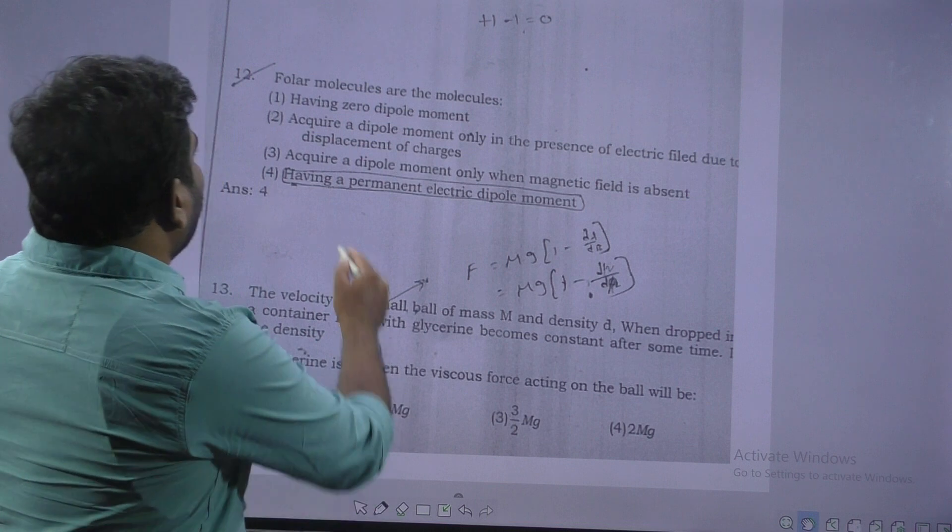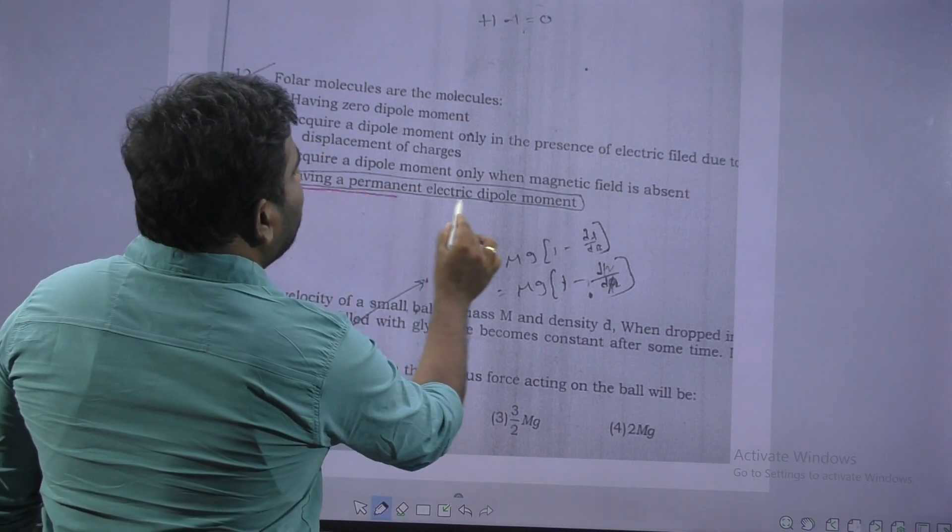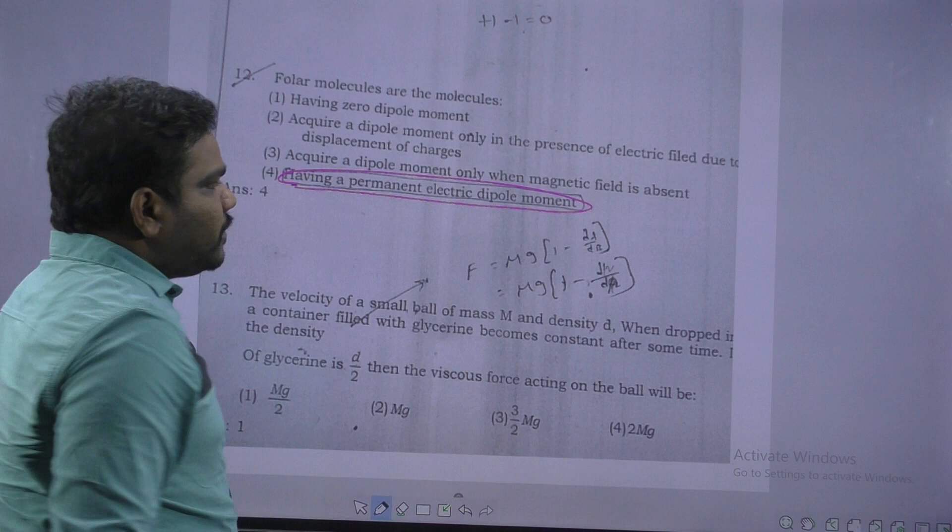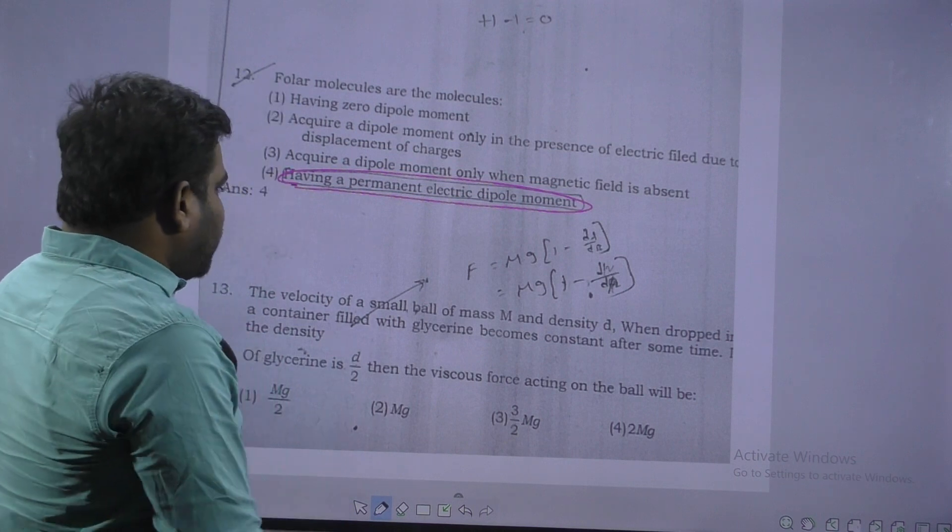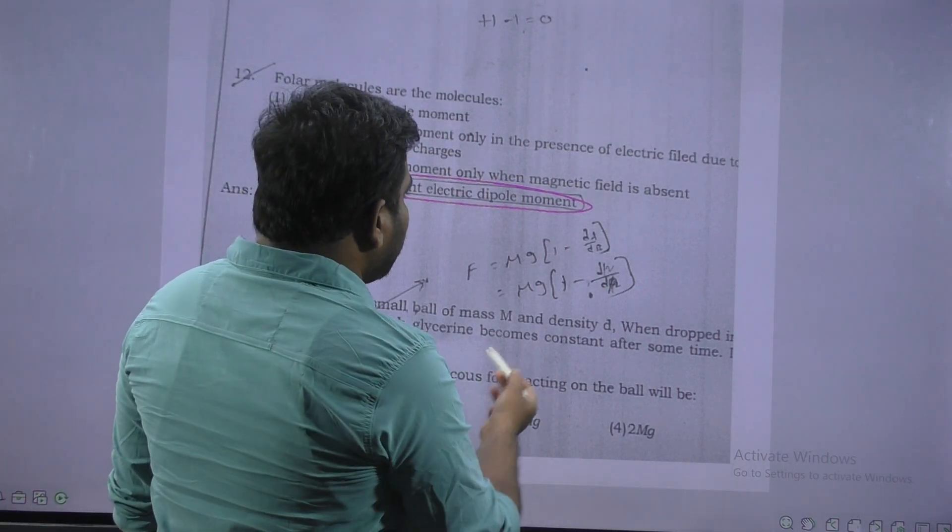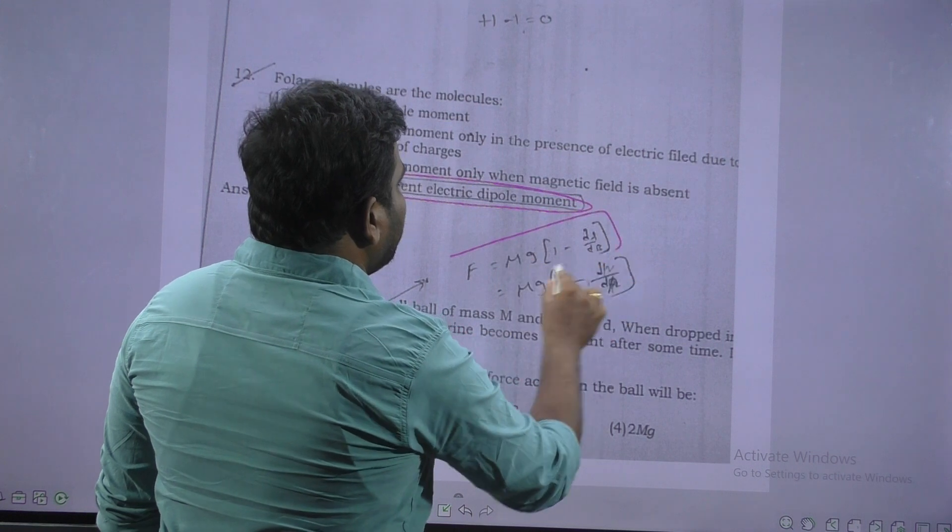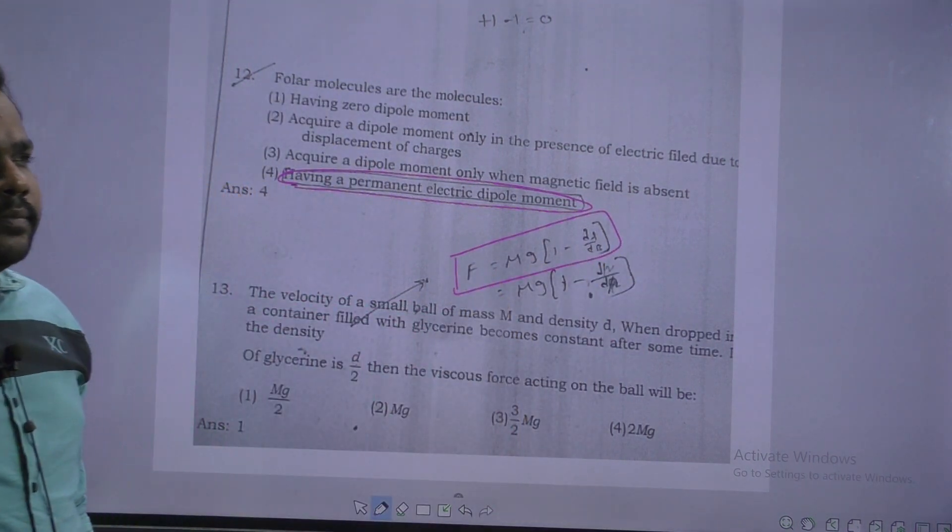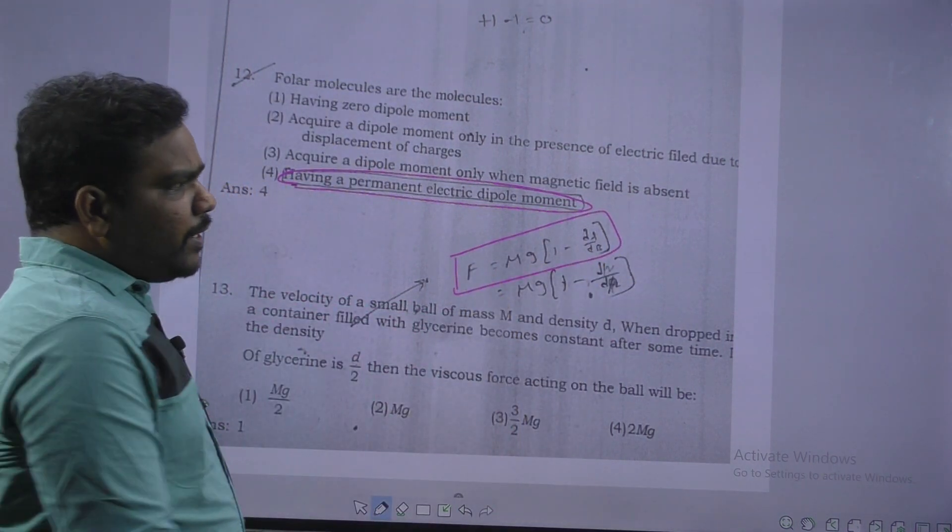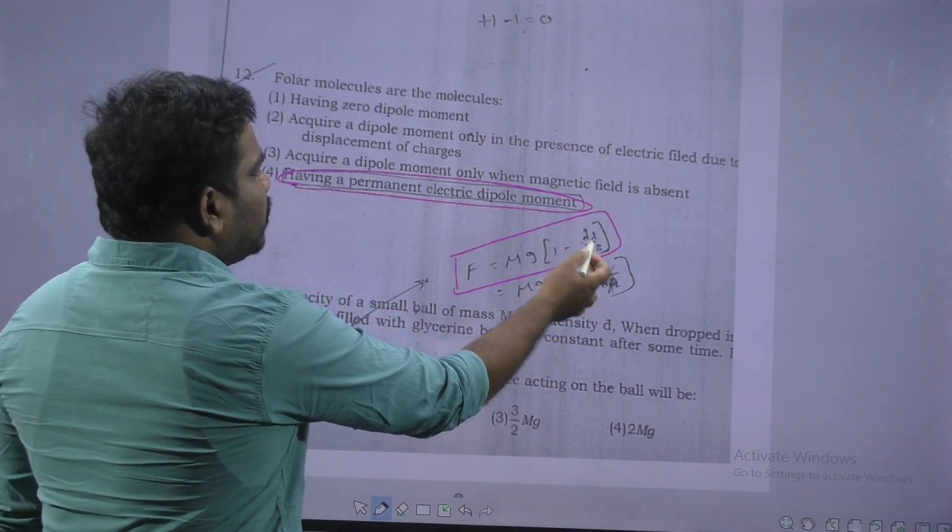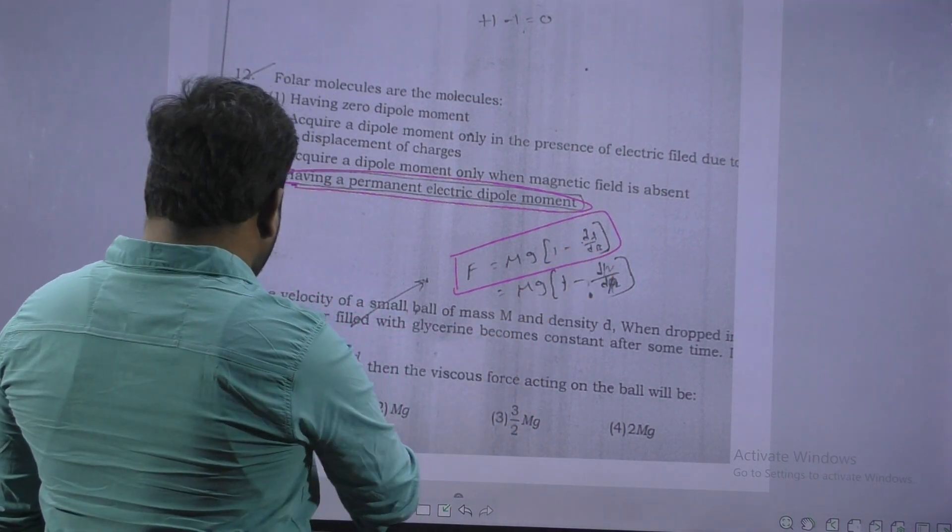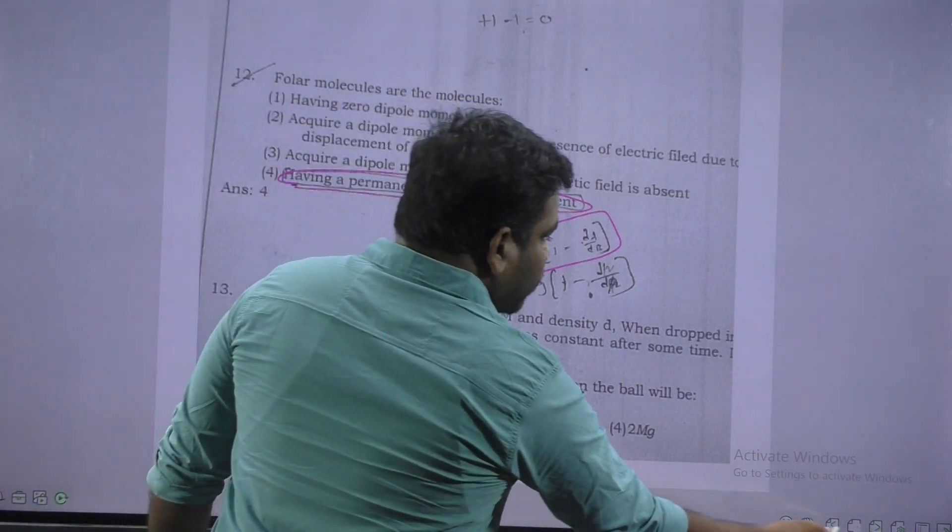Next. Here is the polar molecules or molecules having permanent electric dipole moment. Next. The velocity of the ball is asked, we just use this formula. Force in liquid is mg into 1 minus density of liquid by density of body. So here substitute d by 2, then we will get mg by 2.